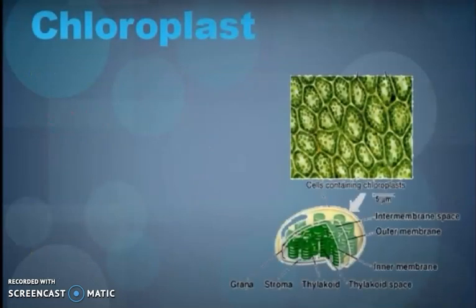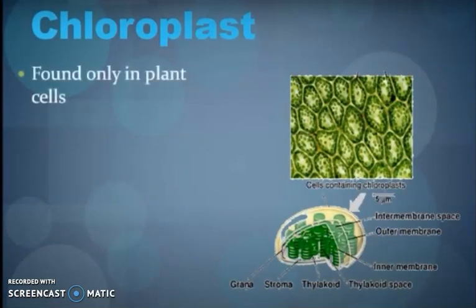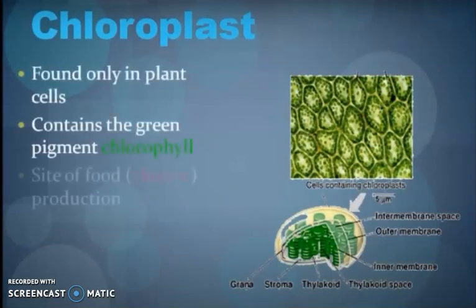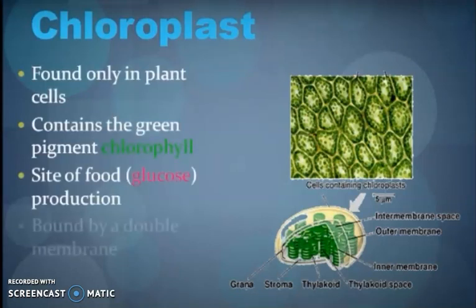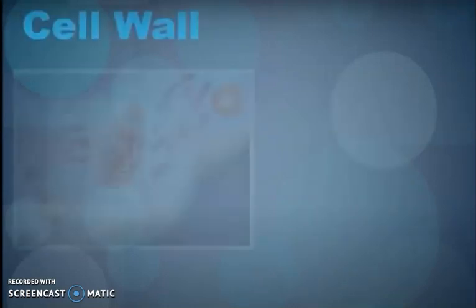Chloroplasts help in the process of photosynthesis because they contain the chlorophyll pigment. They are found only in plant cells and are the site of food production.